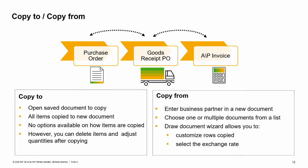However, you can delete items and adjust quantities after copying. The other method for copying a document is copy from. The copy from button allows you to select a base document or documents from which to create a new document. Clicking copy from starts the draw document wizard. To use the copy from function, you open a new document and enter a business partner. After choosing the copy from button, you can choose one or multiple documents from a list. The draw document wizard allows you to customize the rows and quantities copied into the target document, as well as select which exchange rate to use. When you save a target document that contains all of a base document's items and quantities, the base document will be closed and you will not be able to copy it again to another document.